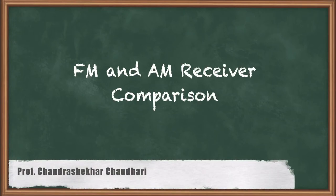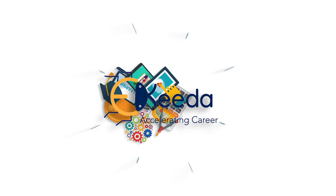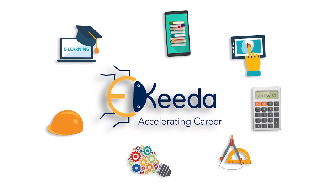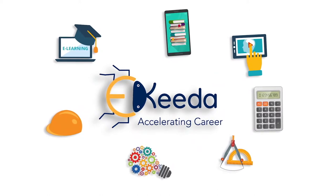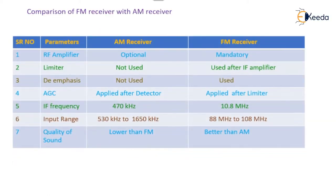Hello friends. Now we will see the comparison of FM receiver with AM receiver. Certain parameters are defined to distinguish between the AM receiver and FM receiver. The first is the RF amplifier. The presence of RF amplifier in AM receiver is optional, whereas it is mandatory in the FM receiver.